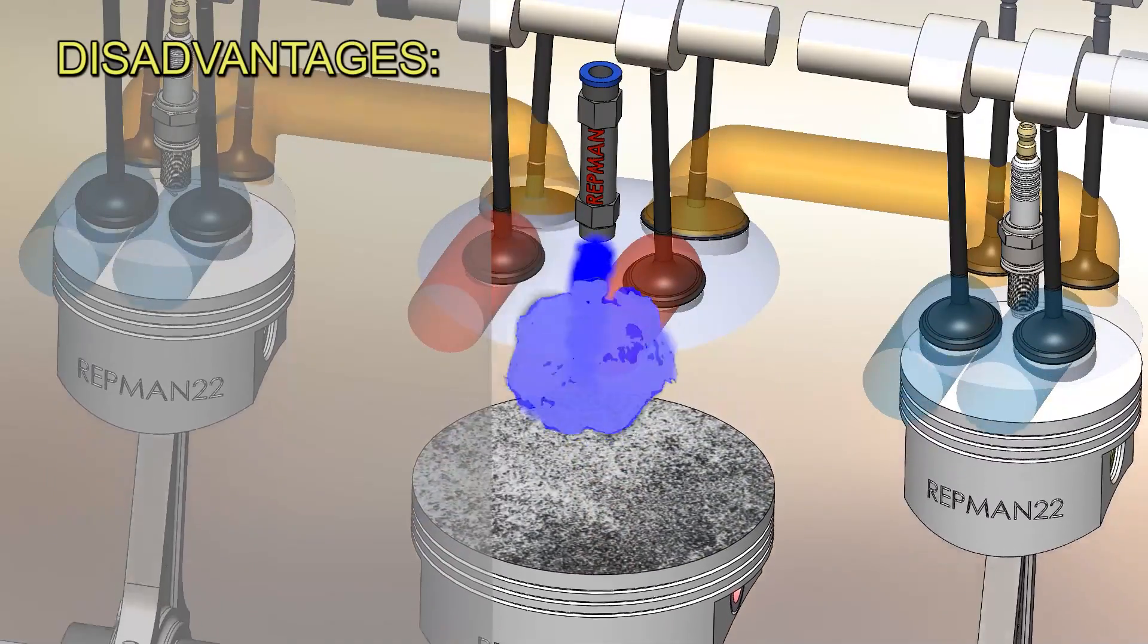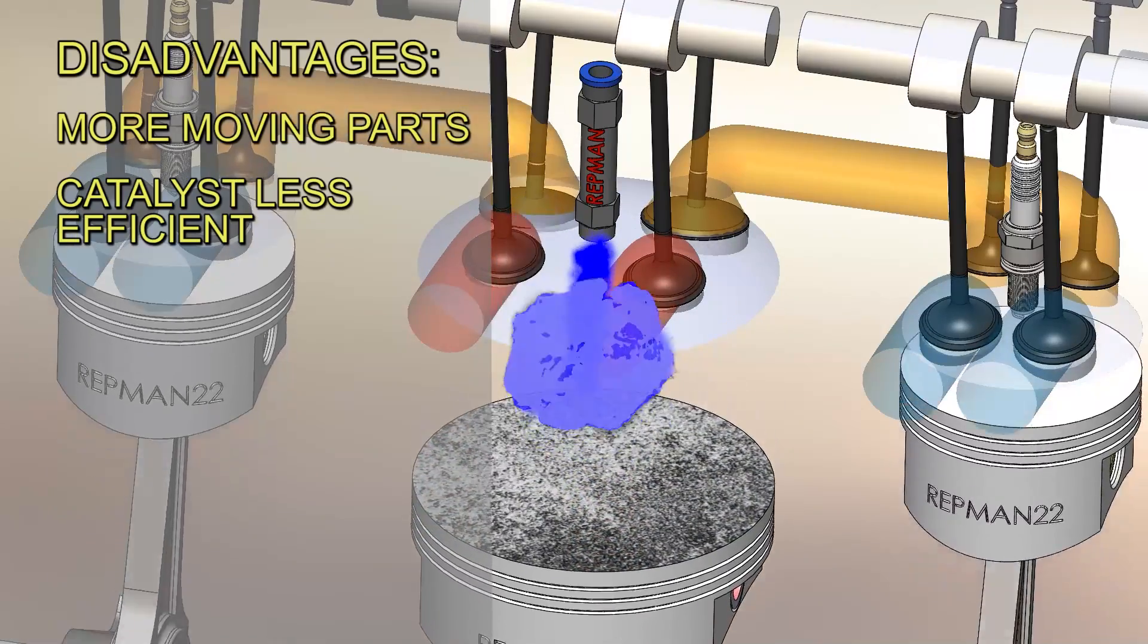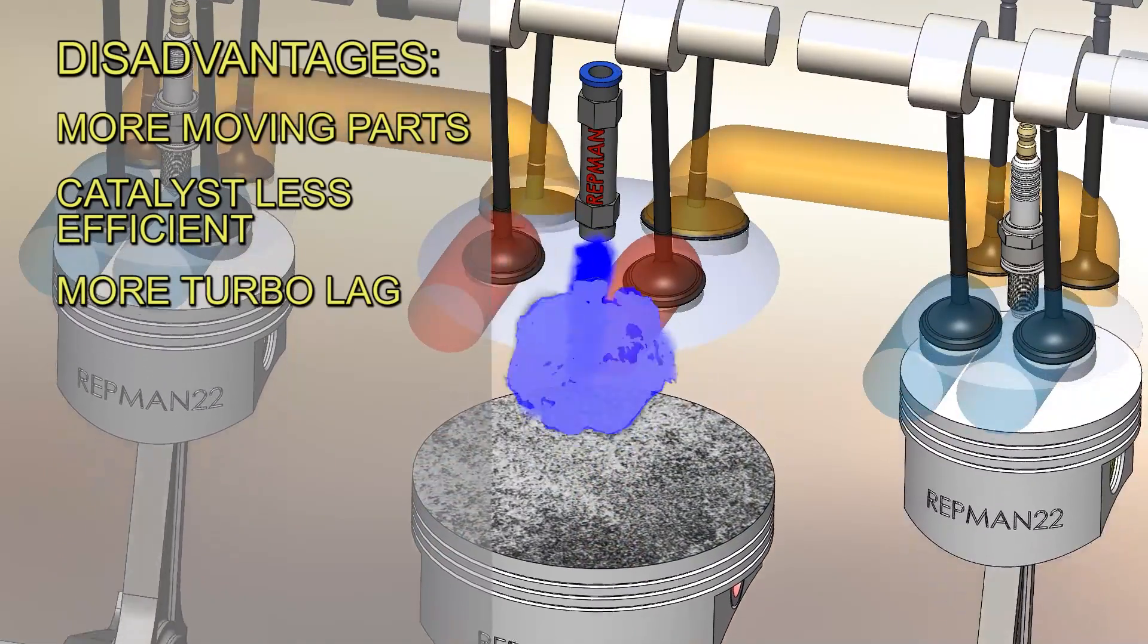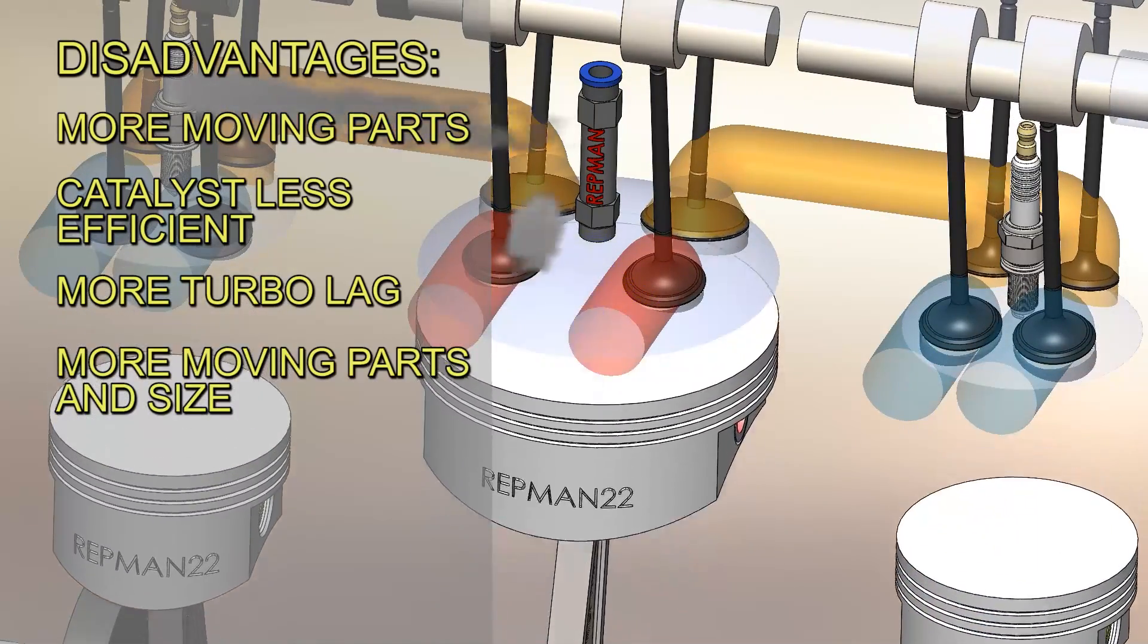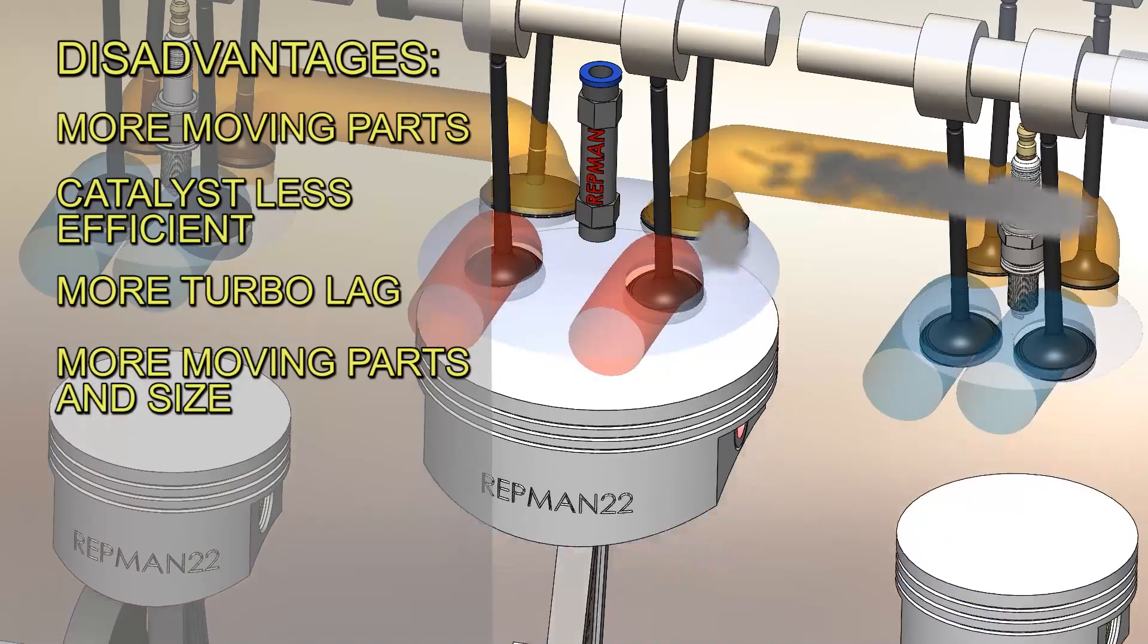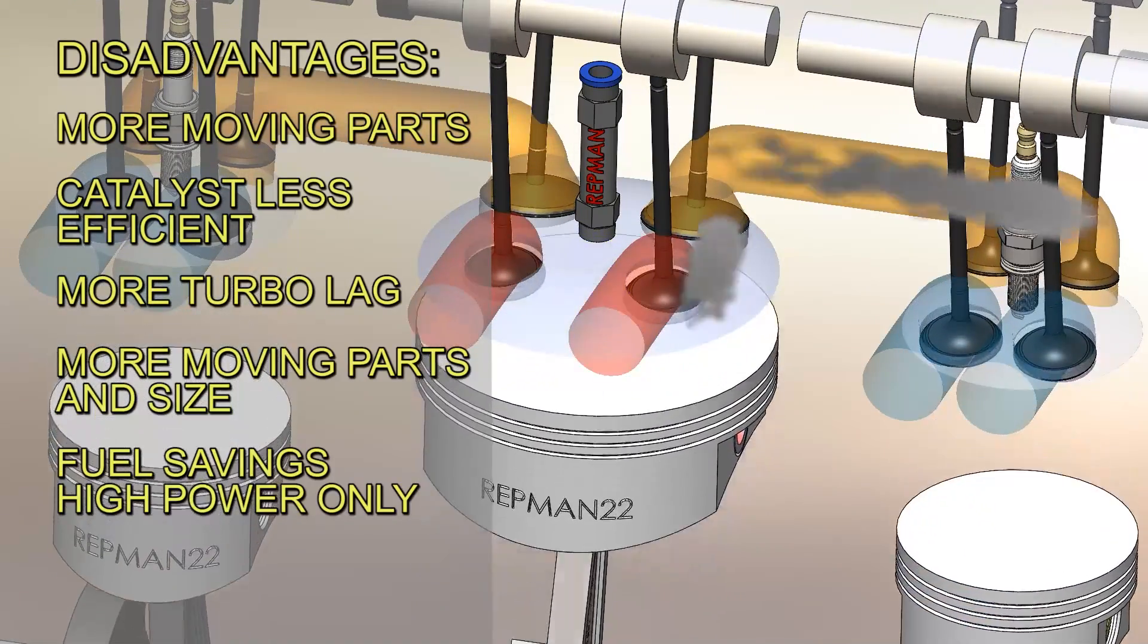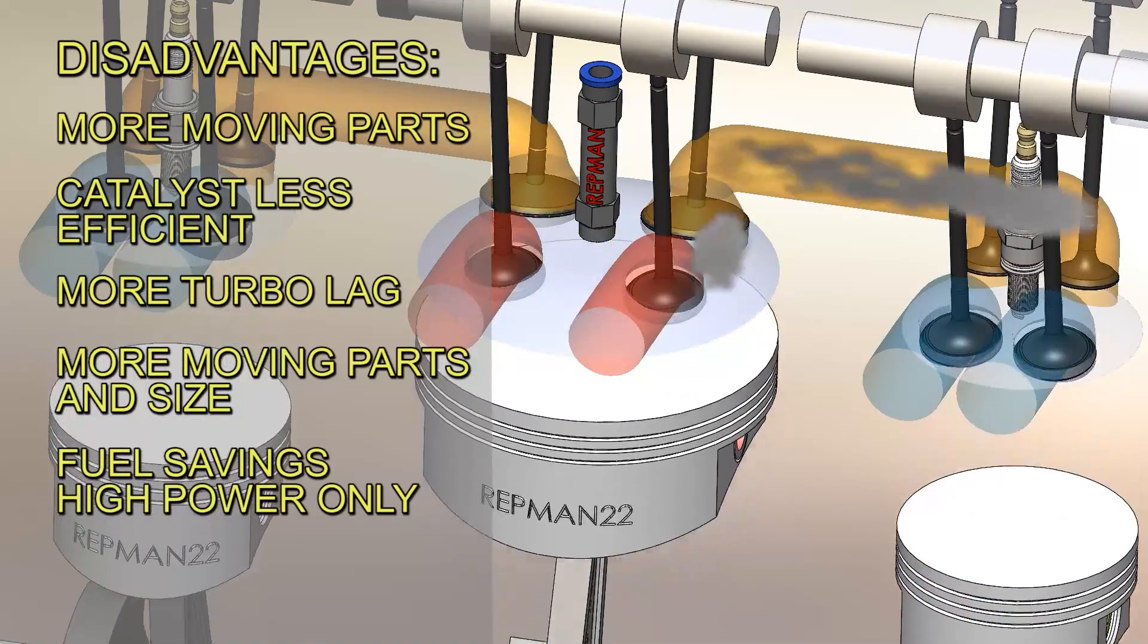Disadvantages: It has a greater number of moving parts. The exhaust gases have a lower temperature and are less effective with the catalyst to purify gases. By having less pressure, the turbo receives the gases at a lower speed, increasing turbo lag. With more moving parts, there's more friction. Fuel savings only occur effectively when the engine operates at maximum power. Otherwise, the exhaust gases will be too low and will not be enough to push the large piston.